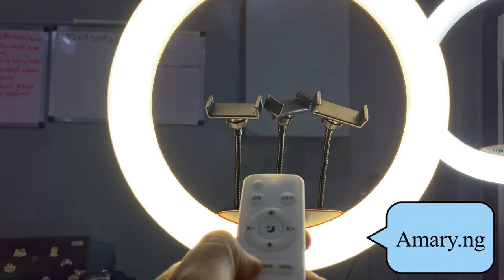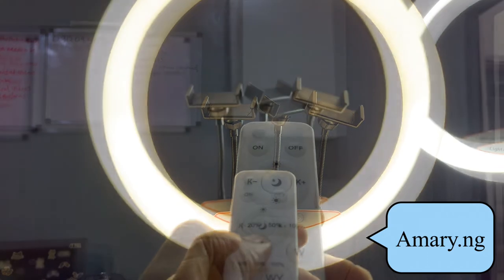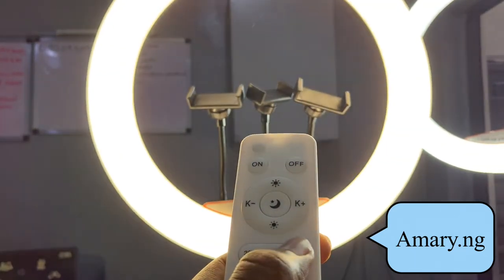It has 100%, 20%, and 50% for reducing and increasing the ring light brightness, basically.